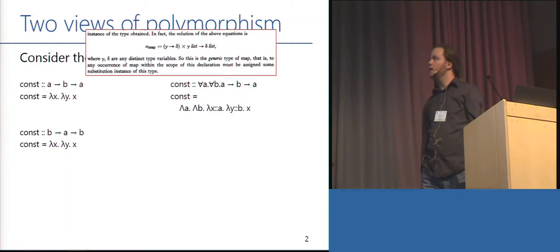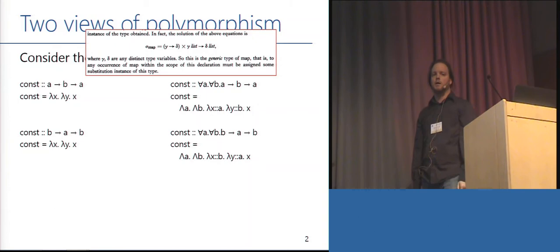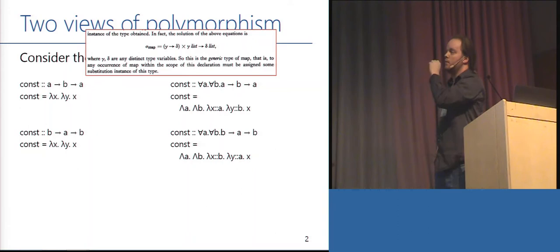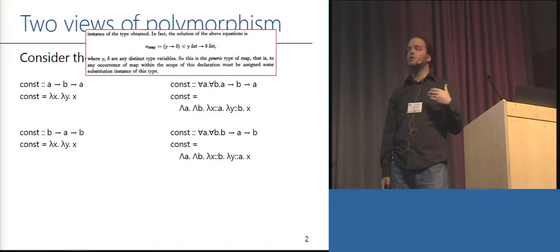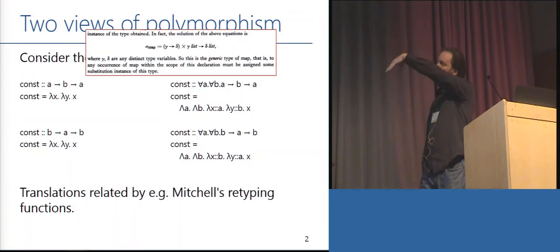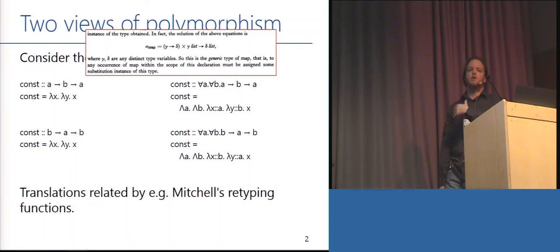But if we apply the same naive translation to that, we get a very different term in our explicitly typed language — the type is different, and the use of types after the type applications are different. So given that we have the same thing in the left-hand column and different things in the right-hand column, why do we think explicit translation to an explicitly typed approach is a good semantics?